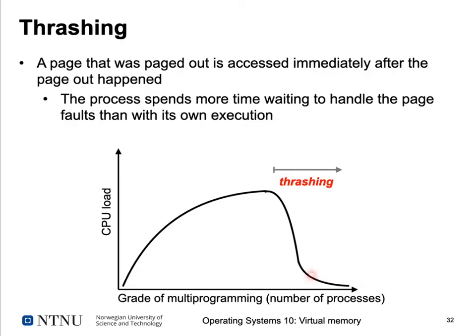This means that even with many processes, they stand on each other's toes — the system is continuously swapping pages in and out of secondary storage without doing useful work. With large main memories today this is less of a problem, but on early machines with small memories, thrashing was a real problem when too many users logged in simultaneously. The system ran low on memory, each process had only a handful of pages available, and the system was busy doing I/O rather than useful computation.